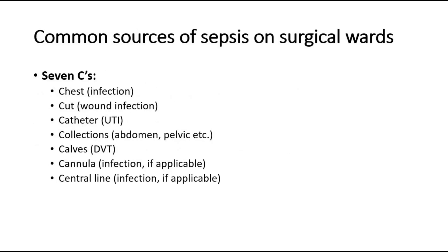The common sources of pyrexia in a surgical patient can be remembered using the 7Cs: chest infection, cut wound infection, catheter causing urinary tract infection, collections in abdomen or pelvis, calves deep vein thrombosis, cannula infection, and central line infection.